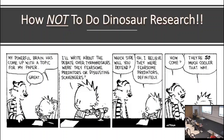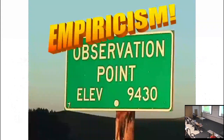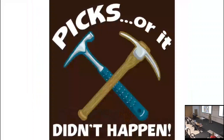We want to avoid using emotions or preconceptions to come to conclusions — we should let the data help us. This is how not to do dinosaur research: 'My powerful brain has come up with a topic for my paper — the debate over tyrannosaurs, whether they were fearsome predators or disgusting scavengers. Which side will you defend? I believe they are fearsome predators. How come? Because they're so much cooler that way.' Hopefully when I wrote that paper, I actually used good evidence and not simply the fact that I think tyrannosaurs are awesome.